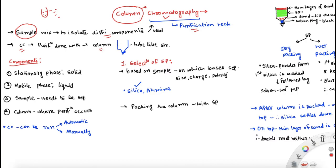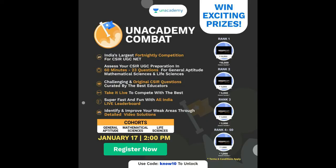Now what is a column? A column is a tube-like structure which is either made up of glass or plastic — most likely it's going to be glass — and that's what we call a column. So the purification happens within this column, and this is what we call column chromatography.